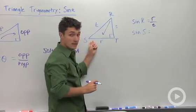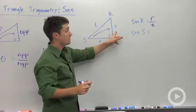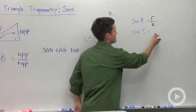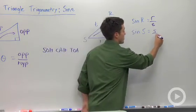If I talk about S as my theta, then now my opposite side is lowercase s. So that's my numerator. And my hypotenuse is still t. That won't change.